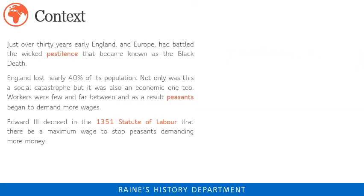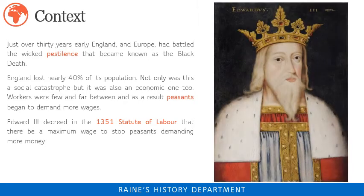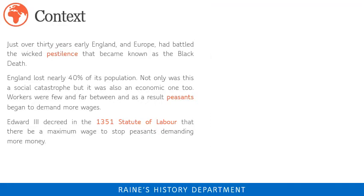Workers were few and far between, and as a result peasants began to demand more wages. Unsurprisingly, this did not please the barons, lords and even the church. Edward III stepped in and decreed in the 1351 Statute of Labour that there be a maximum wage to stop peasants demanding more money. This made the peasants very angry. The introduction and collection of a poll tax under Edward and then Richard II only upset the peasant population more.